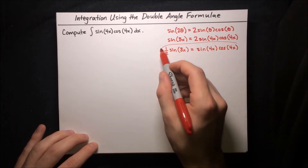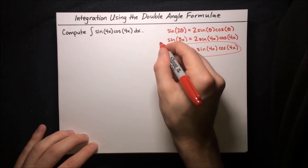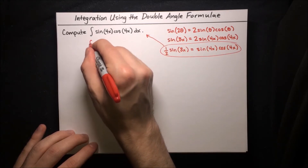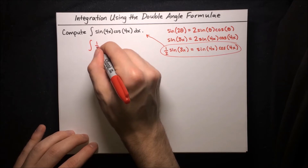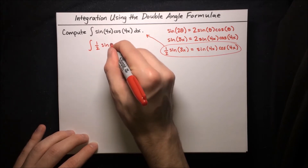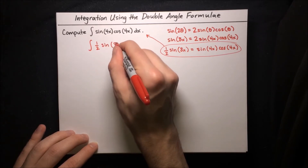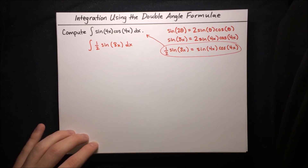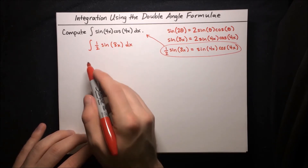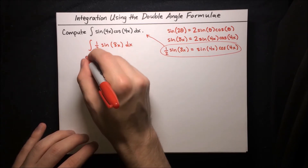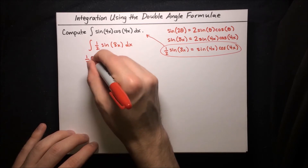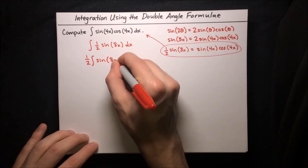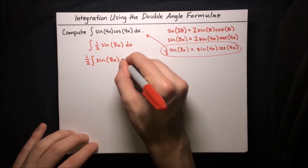So this is what we will substitute into our integral to make it easier to compute. This becomes the integral of one half sine of 8x dx. We can factor out that one half outside the integral, giving us one half times the integral of sine of 8x dx.